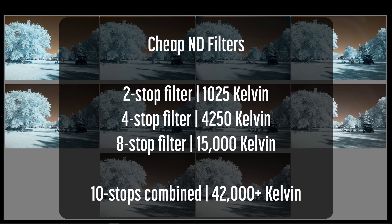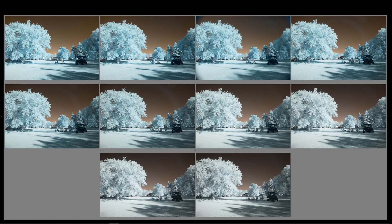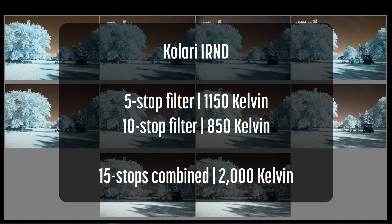Practically speaking, this means that combining these filters shifted the color temperature so much that it could not even be corrected with a custom profile. This is where the Kalari IRND filters claim to have an edge — the even transmission of infrared and visible light. The Kalari IRND 5-stop filter shifted the color temperature an average of only 850 Kelvin. Combined, the Kalari IRND 5-stop and 10-stop filters shifted the color temperature an average of 2,000 Kelvin. To put this in context, in visible light, daylight and shade are also 2,000 Kelvin apart. In infrared, a 2,000 Kelvin shift is easily correctable with the custom profile you're already using.